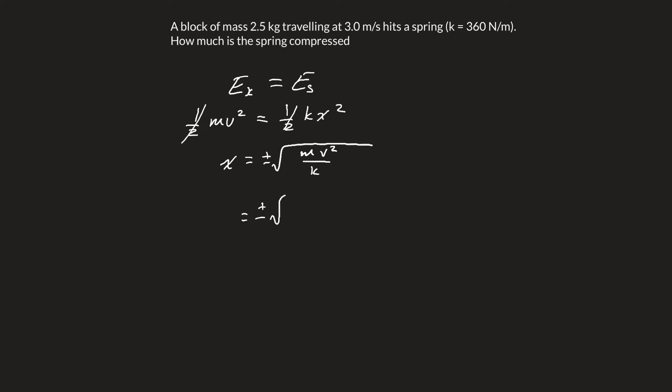By plugging in some values, we have m is 2.5 kilograms, v is 3.0 meters per second squared, and k is 360 newtons per meter. What we're left with is plus or minus about 0.25 meters.